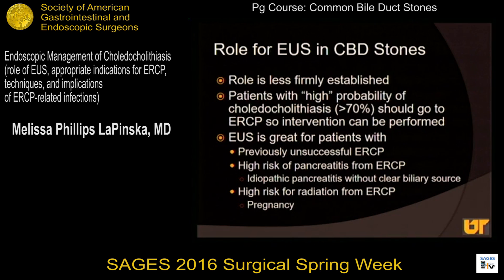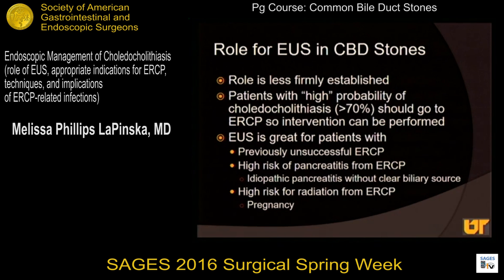In patients who have a high probability — most studies use 70% as a cutoff — those patients are generally referred either for laparoscopic common duct exploration and/or ERCP because of the need for intervention in that population. In terms of the endoscopic ultrasound benefit, these are great for patients who have undergone a previously unsuccessful ERCP, patients who have a high risk of pancreatitis, specifically idiopathic pancreatitis patients without a clear biliary source, and patients in whom radiation exposure carries higher risk, because the negative predictive value of an EUS may save them that future procedure.